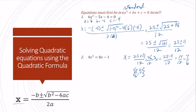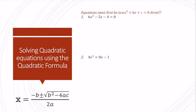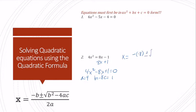Let me give us some room and solve our second example. I have 4x squared equals 8x minus 1. I'm going to move everything to the left, so I have 4x squared minus 8x plus 1 equals 0. So my a is 4, my b is negative 8, and my c is 1.